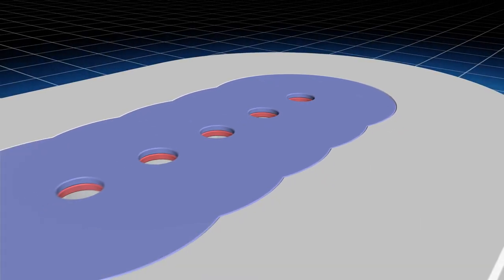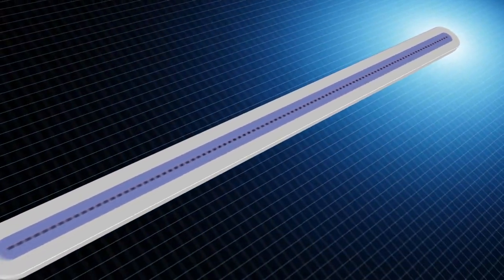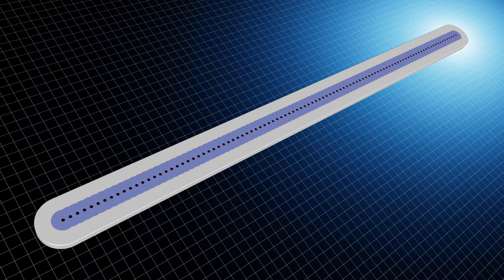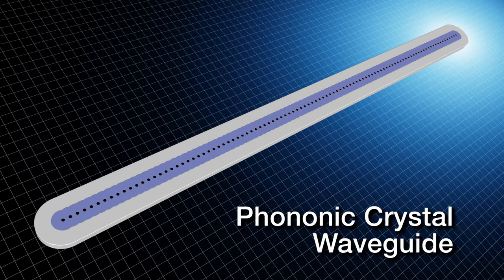Arranging 100 of these structures in a one-dimensional array with a mutual offset of 10 micrometers forms a phononic crystal waveguide.